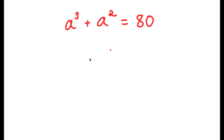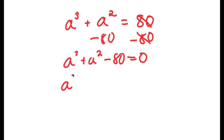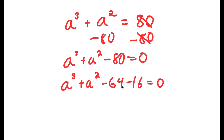In this problem, I have a to the power of 3 plus a squared is equal to 80. To solve this, I'm going to first subtract 80 from both sides, so I get a cubed plus a squared minus 80 is equal to 0. Now I'm going to rewrite this as a cubed plus a squared minus 64 minus 16 equals 0, since negative 80 equals negative 64 minus 16.